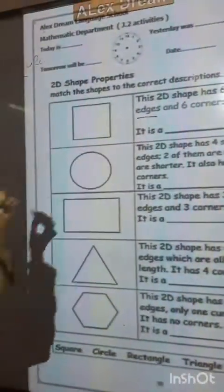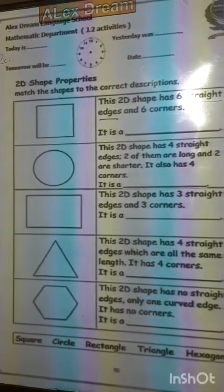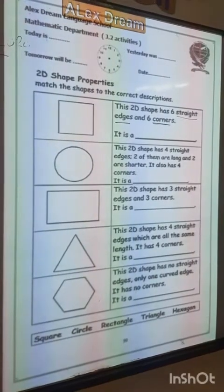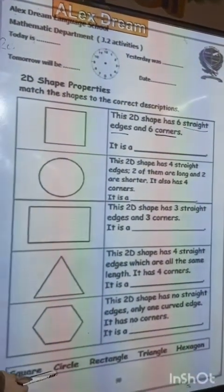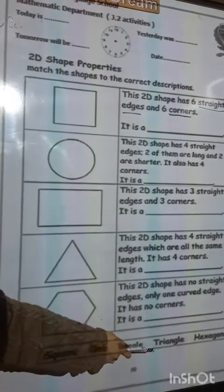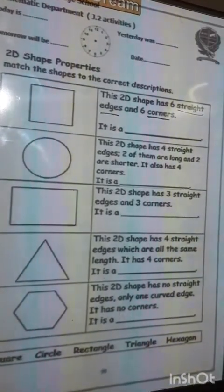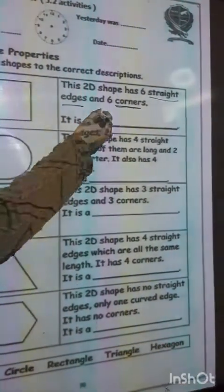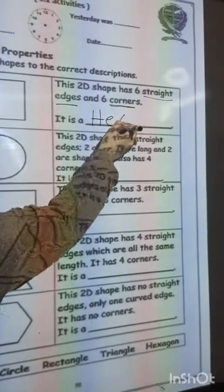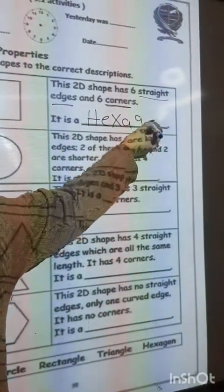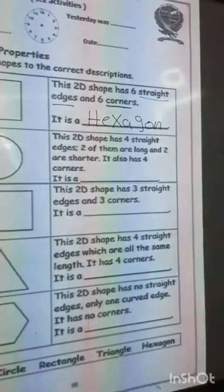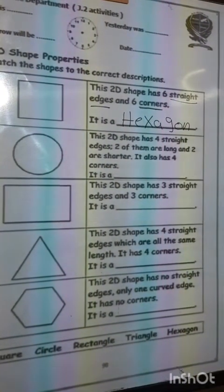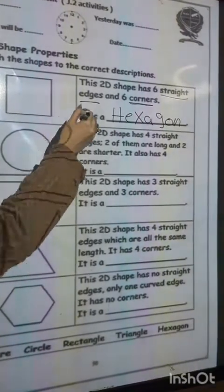Straight edges and six corners. Square, circle, rectangle, triangle, hexagon. That's right, hexagon. Match the shape, hexagon.